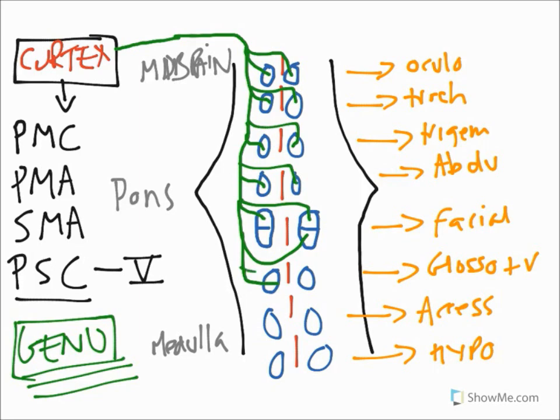Glossopharyngeal and vagus, bilateral. Accessory, bilateral. And when we come down to hypoglossal, slightly different, contralateral only.